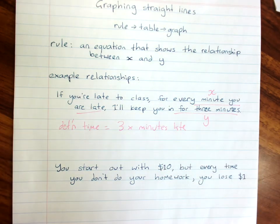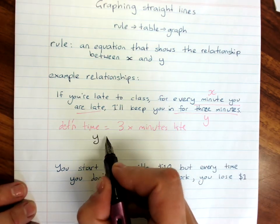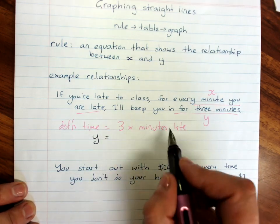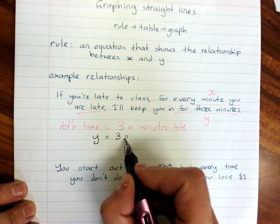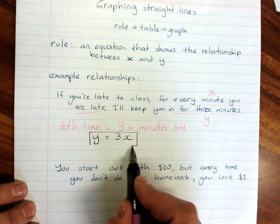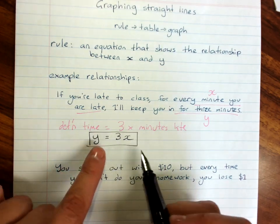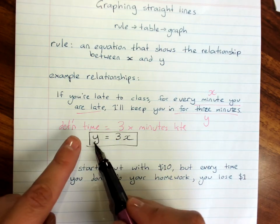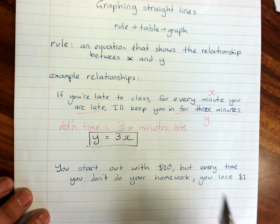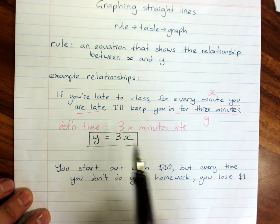Now, if my detention time was y, then three times x, minutes late, would be just 3x. And this is a rule of a straight line that would show the relationship between how late I am and how much my detention time is. We'll learn how to graph a rule like that.